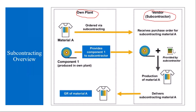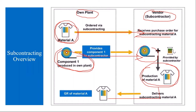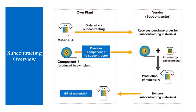Here we have the plant and we have the subcontractor — the subcontractor is the vendor. You need a material, let's say material A, so you create a subcontracting PO. The subcontractor receives the PO, you provide the components to the subcontractor, and using those components he does the production, then delivers the material back to us and we receive it.